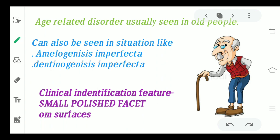Attrition is normally an age-related condition. When masticatory forces are applied on the teeth for a long period of time, with maxillary and mandibular teeth coming into contact repeatedly over many years, attrition is usually seen above the age of 35 years. In normal conditions, it manifests in older individuals, but in developmental conditions like amelogenesis imperfecta or dentinogenesis imperfecta, attrition can also be seen.